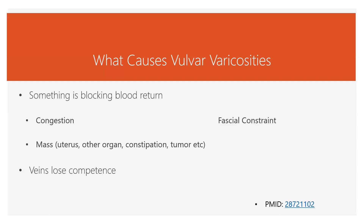Other causes include tumors. If you have a cyst, a tumor, a fibroid, a uterine fibroid, an ovarian cyst, or endometriosis — all of those things can cause congestion in the pelvis that leads to vulvar varicosities.